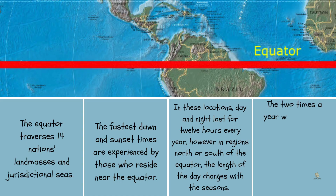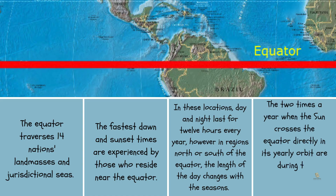The two times a year when the Sun crosses the equator directly in its yearly orbit are during the equinoxes of March and September.